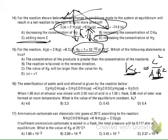For option C, regarding Kp versus Kc, you have to do calculations based on delta N values. For this particular case, on the product side it's 2, and on the reactant side it's 1 plus 2 = 3, so delta N equals negative 1. Check the lecture notes for this case. The most appropriate answer is B.